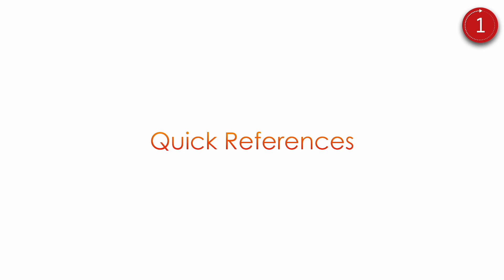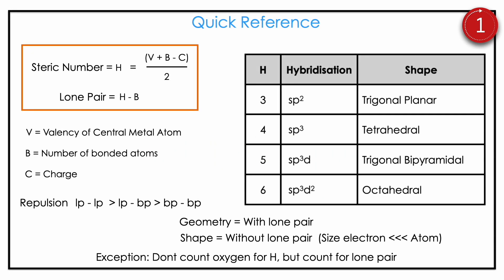Here I give a quick reference for self-learning. What you learn from this video: steric number H = (V + B − C) / 2; lone pair = H − B; V is valence, B is bonded atoms, C is charge. Repulsion order: lone pair is highest, bond pair is lowest. The size of the atom is way greater than the electron, so lone pairs don't contribute visibly to shape — this is why geometry versus shape differ. For oxygen: don't count it for H but do count it for lone pair calculation. Memorize the steric number table: H = 3, 4, 5, 6 means sp2, sp3, sp3d, sp3d2 hybridization with corresponding shapes: trigonal planar, tetrahedral, trigonal bipyramidal, octahedral.